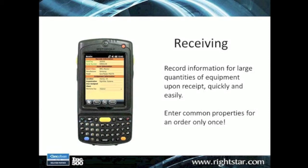ScanStar has three modules to keep the CMDB current. The first is receiving: when someone on the receiving dock gets a shipment of PCs or other equipment, they can accurately scan down the line using serial numbers or asset tags to quickly have each CI created in the Footprints database. We can also capture common properties — if you're receiving 25 Dell laptops, they all share the same manufacturer, probably the same warranty date, and they're initially going into your warehouse. Those common properties are set once, but each unit is uniquely scanned by asset tag or serial number, creating the record within the CMDB.